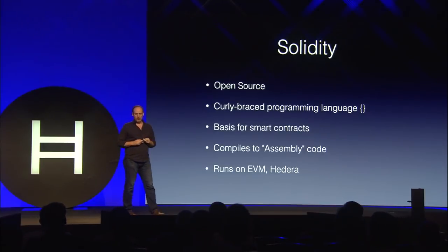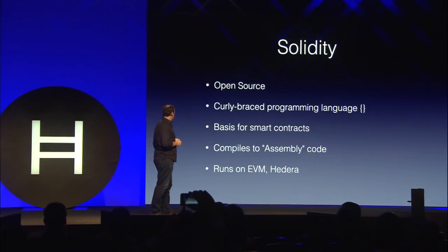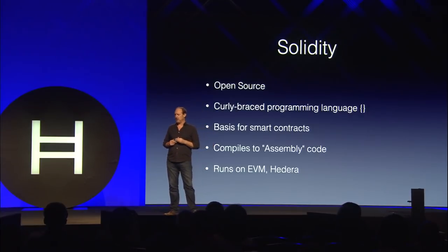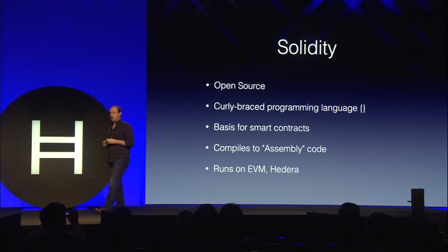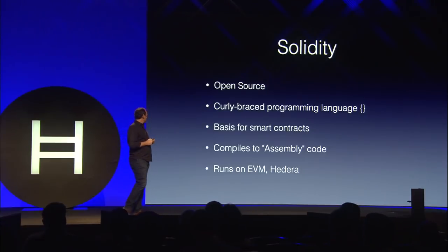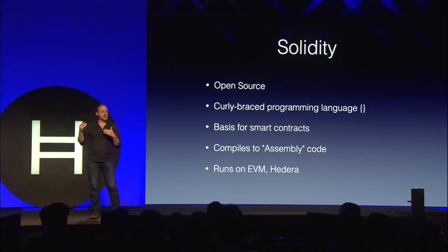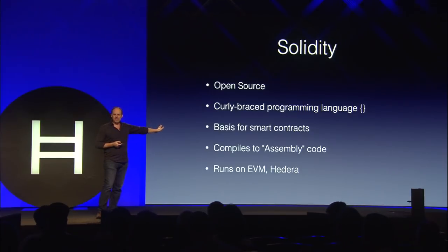Let's talk about Solidity, the programming language for smart contracts. Solidity is open source and uses curly-brace syntax, so if you're familiar with Java or JavaScript it will look very familiar. It has static typing and inheritance. It compiles to assembly code — the computational procedures that drive those transactions and enforce the rules. The compiled assembly code runs on the blockchain, in the EVM, or on the Hedera platform, which also makes it easier to port Solidity to other platforms.